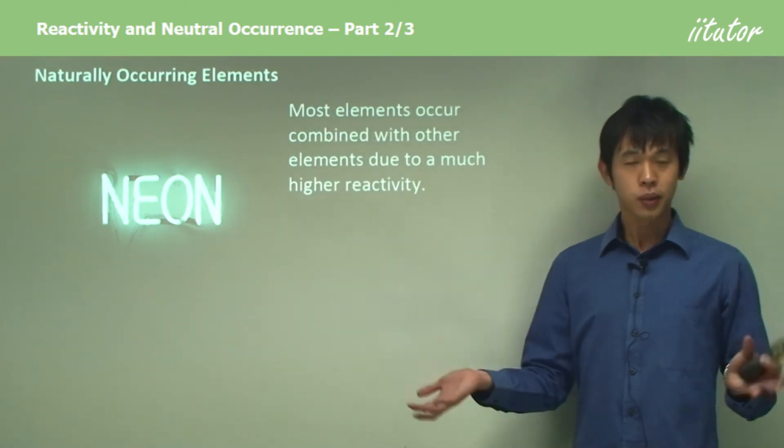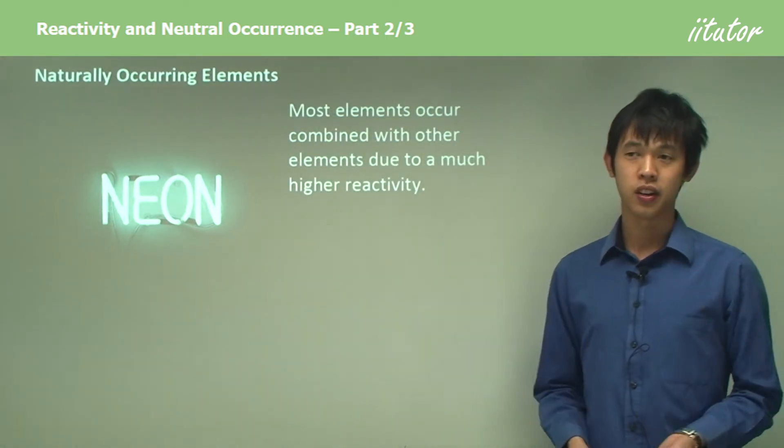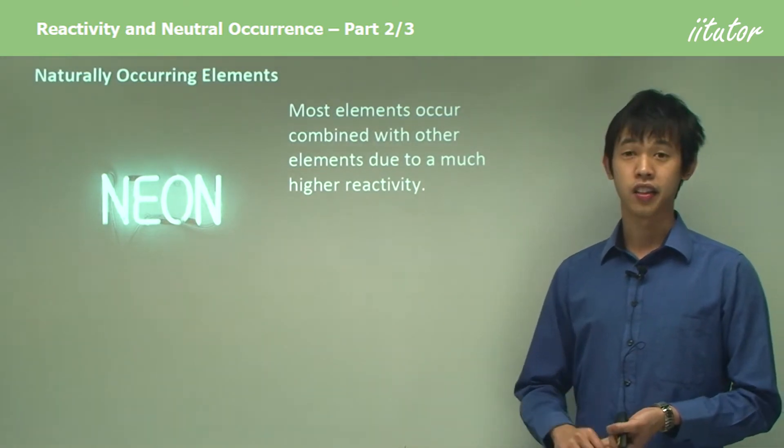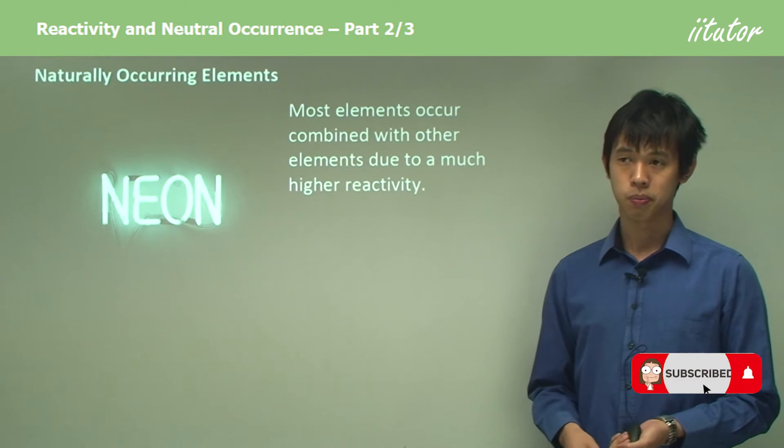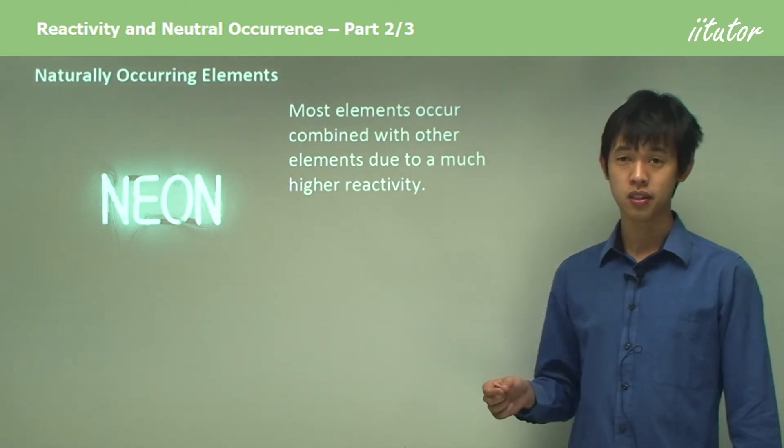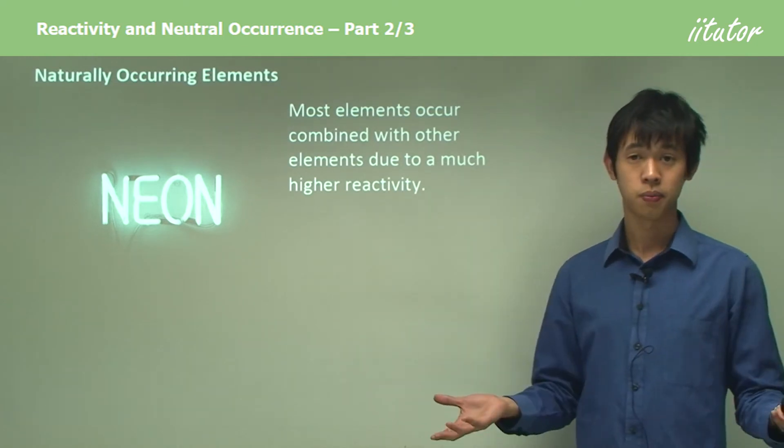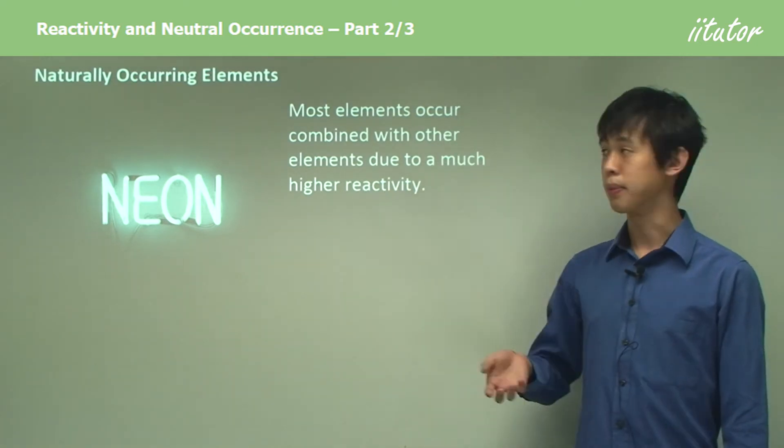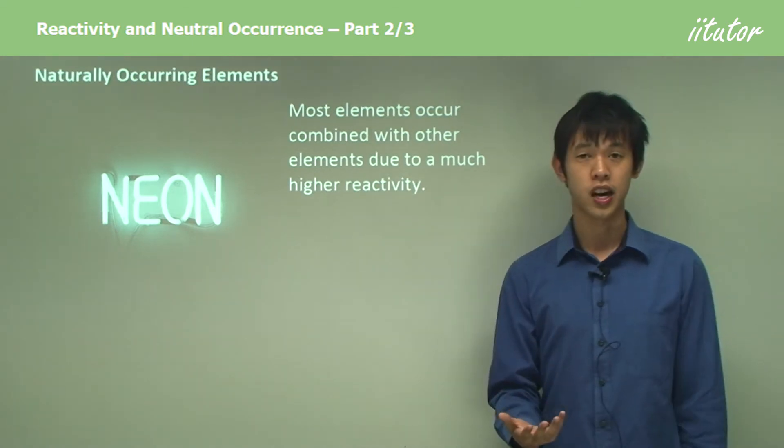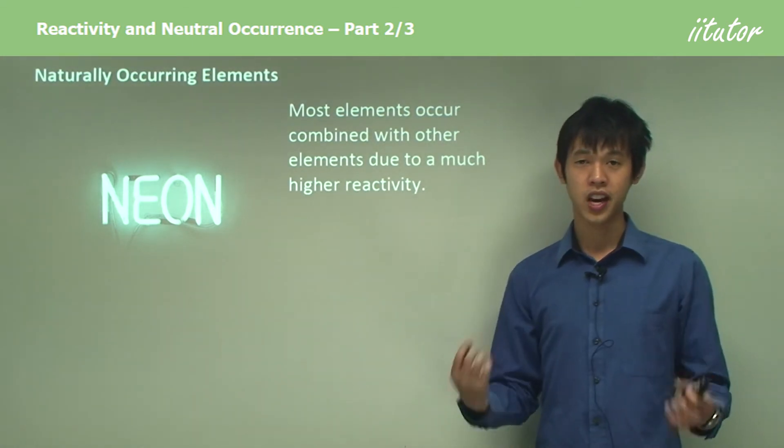For every other element in the periodic table, platinum, gold, silver, and the noble gases make up like one percent or something of the periodic table in terms of the number of elements. What about all those other ones? For the rest of the elements, we usually see them combined with other elements because they have a much higher reactivity.